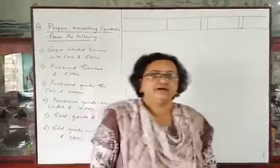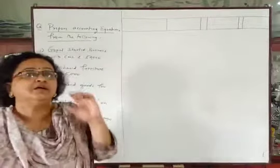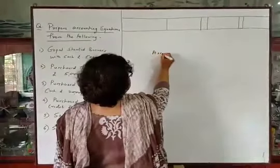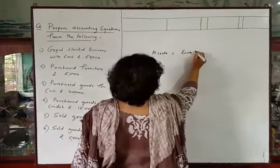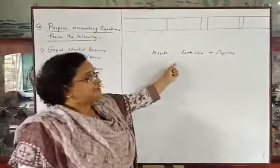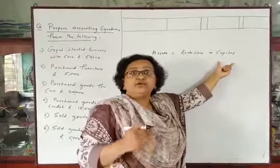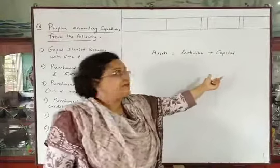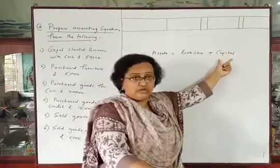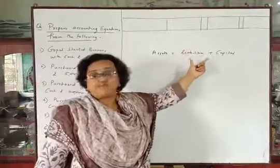Good morning students. We have learnt the dual aspect concept as a principle of accounting, and we know that every business transaction has a dual aspect — that is, a dual effect. This principle is expressed as: Assets = Liabilities + Capital. Assets of the business are always equal to its capital plus its liabilities. Liabilities means outsiders' liabilities, and capital means liability towards the owner of the business.